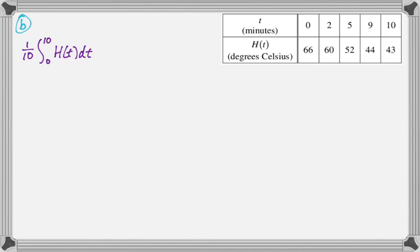And this is going to be the average value of H(t). So it's the average temperature in degrees Celsius of the pot of tea on the time interval from when you start to when you stop. So from 0 to 10. So this is just an average value thing.